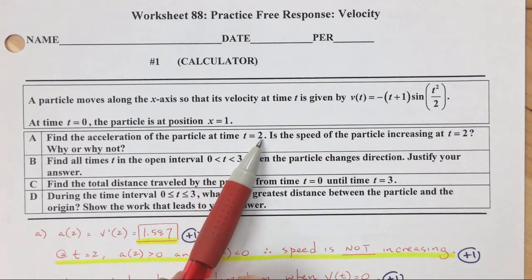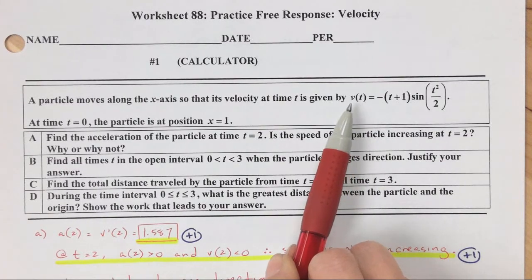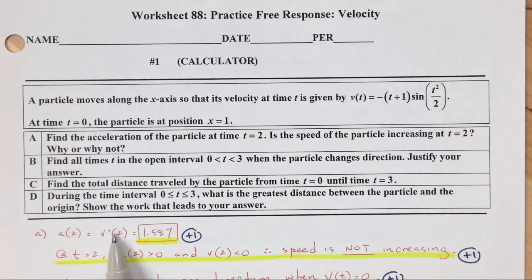So acceleration at t equals 2. Acceleration is the derivative of velocity. So what we can do to find the acceleration is we can find v prime of 2 in your calculator. That would be math 8, and then you're literally plugging in 2, and you get that as your answer. So there's your acceleration.